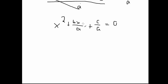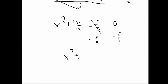Now we can get the c over a term to the right side by subtracting c over a from both sides. That will remove it from the left side, giving us x squared plus b x over a equals negative c over a.